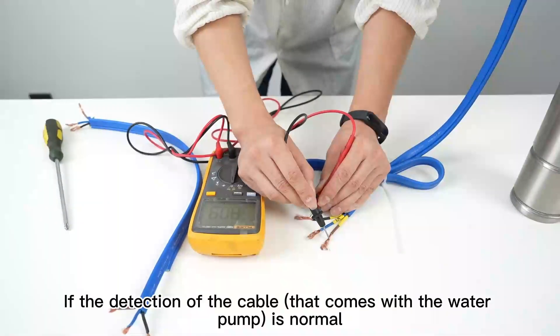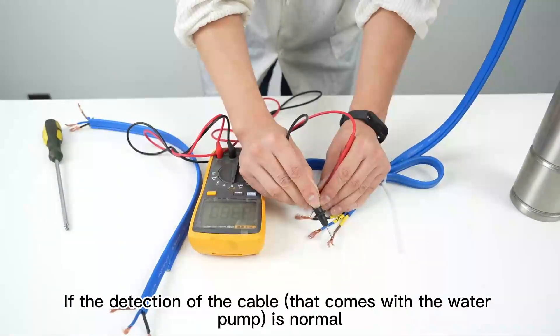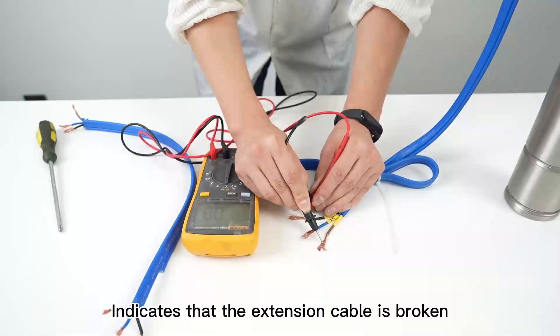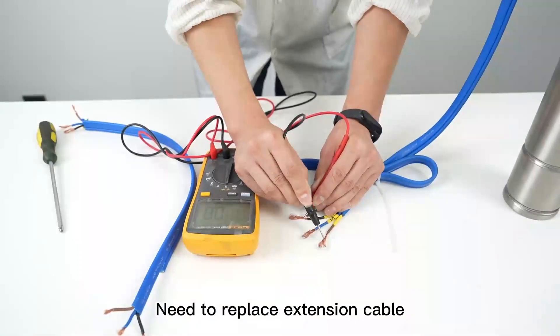If the detection of the cable that comes with the water pump is normal, this indicates that the extension cable is broken. Need to replace extension cable.